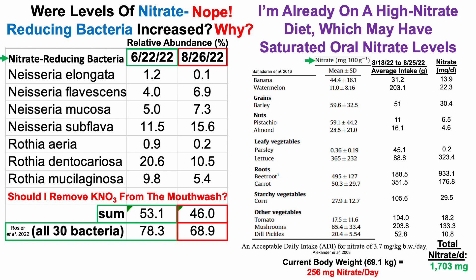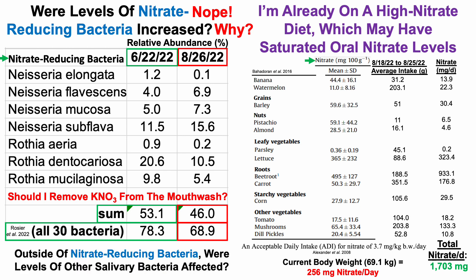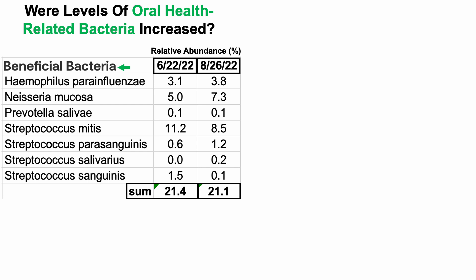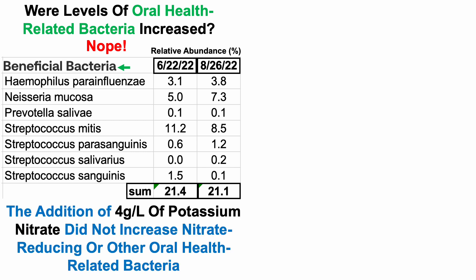Should I remove potassium nitrate from the mouthwash? Before making that decision, let's look at the rest of my oral microbiome composition. Outside of nitrate-reducing bacteria, Bristle's definition of beneficial bacteria shows Neisseria mucosa on the list, but the rest aren't related to Neisseria or Rothia. For the first test I had 21.4% beneficial bacteria; for the second test, a similar 21.1%. So potassium nitrate didn't increase nitrate-reducing bacteria and also didn't increase levels of other oral health-related bacteria.